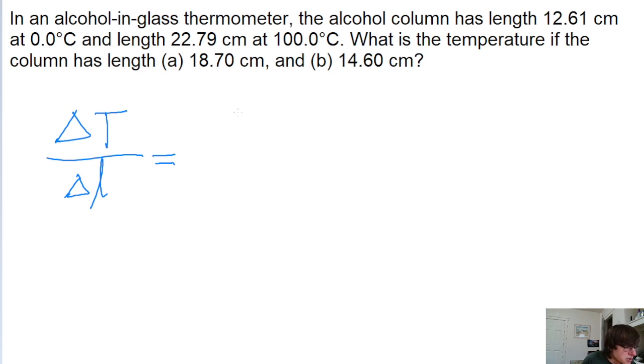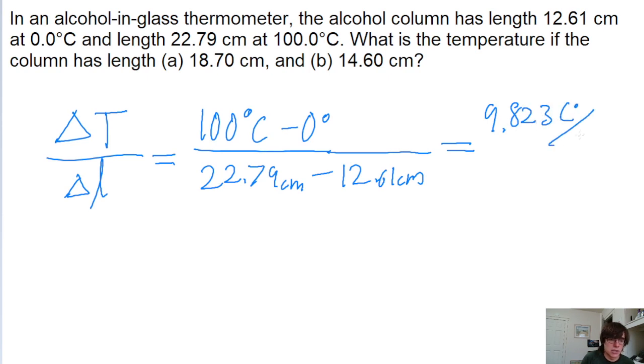So there's a difference between 100 degrees Celsius and 0 degrees Celsius that we're given. And for this change of temperature, there is a change in length from 22.79 centimeters to 12.61 centimeters. So if we put this rate of change into a calculator, we find a relationship of 9.823 degrees Celsius per centimeter.